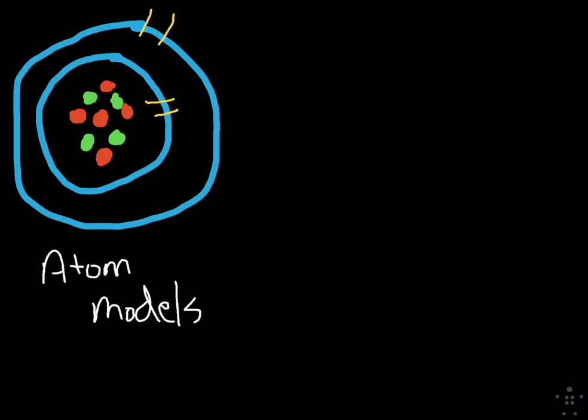Hi guys. This video is about getting information from an atom model. What you have here is a Bohr model of a mystery atom. How do you find out what it is?